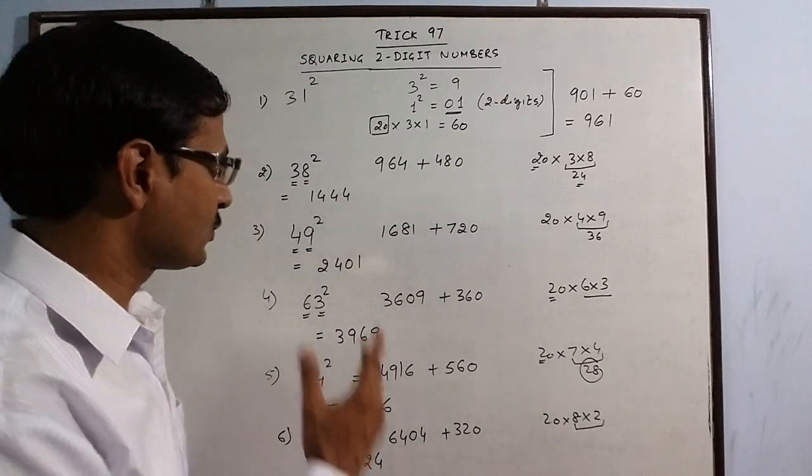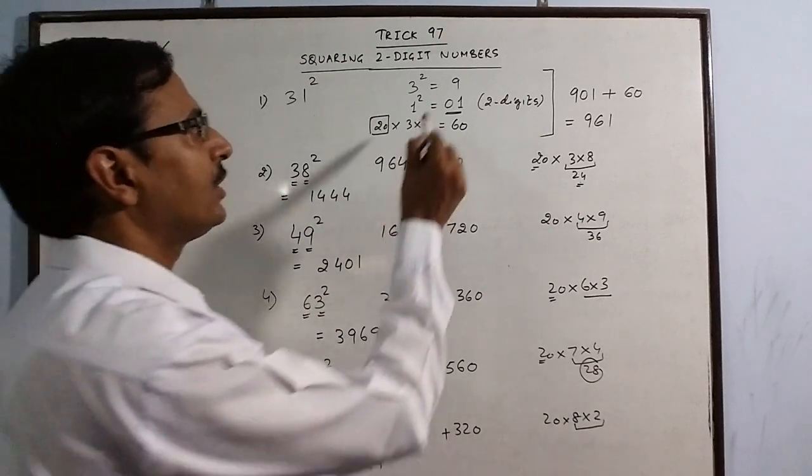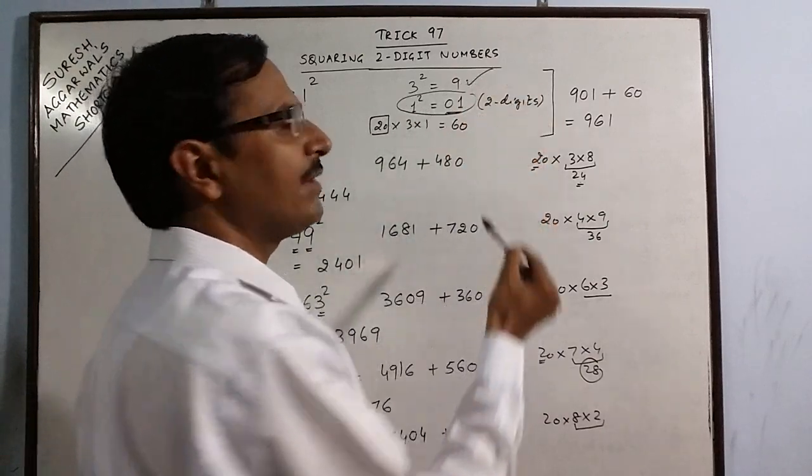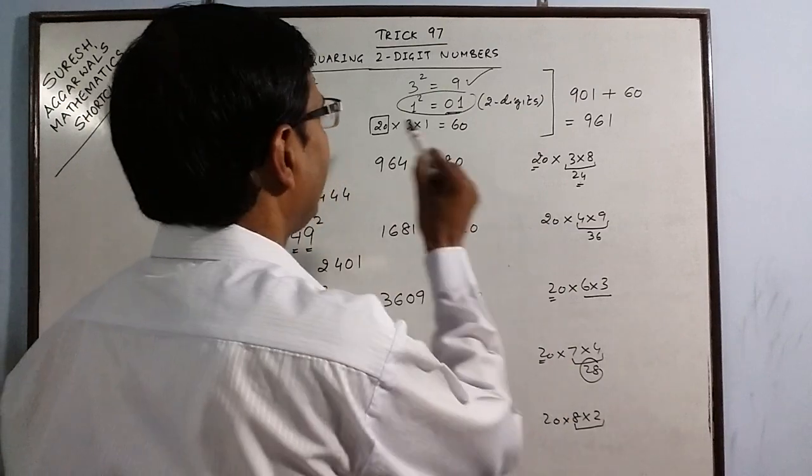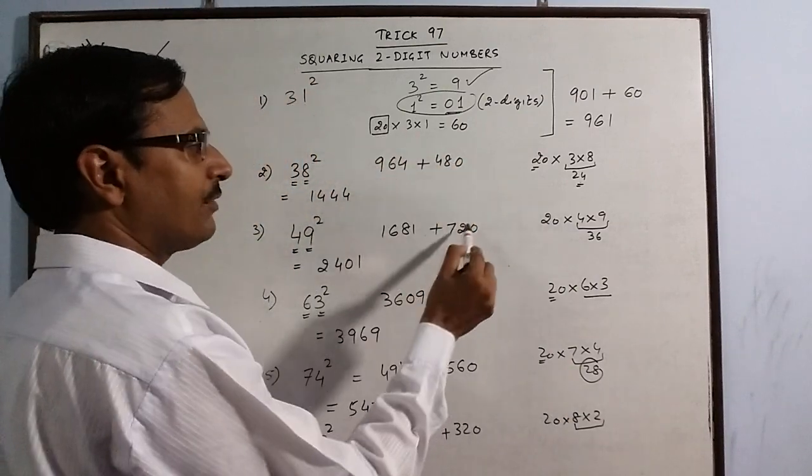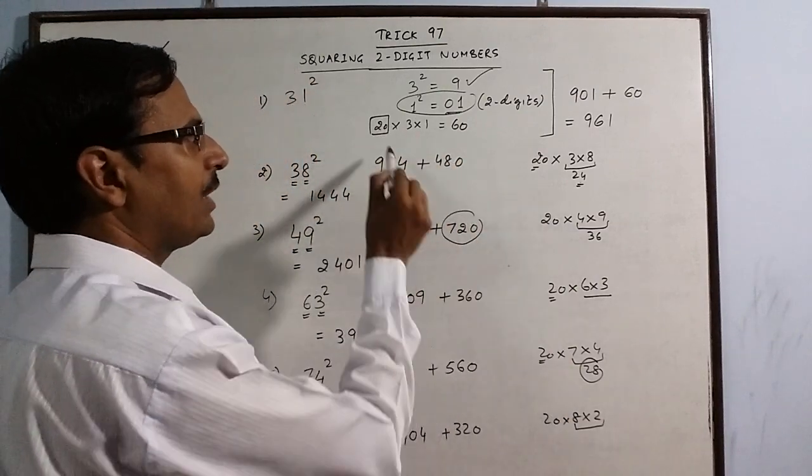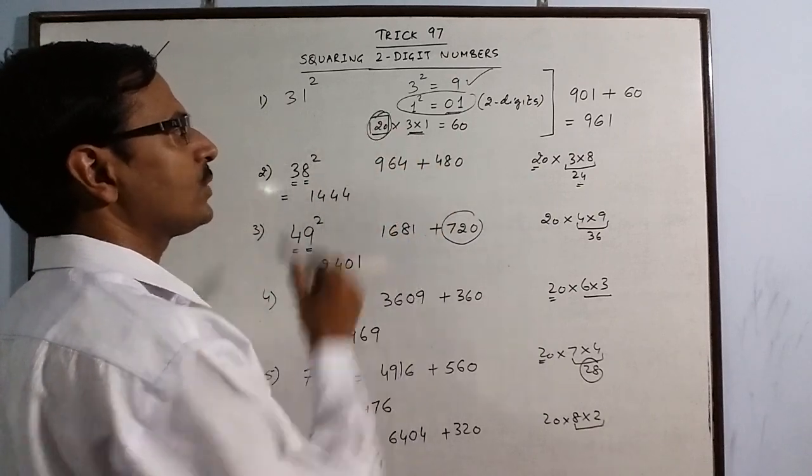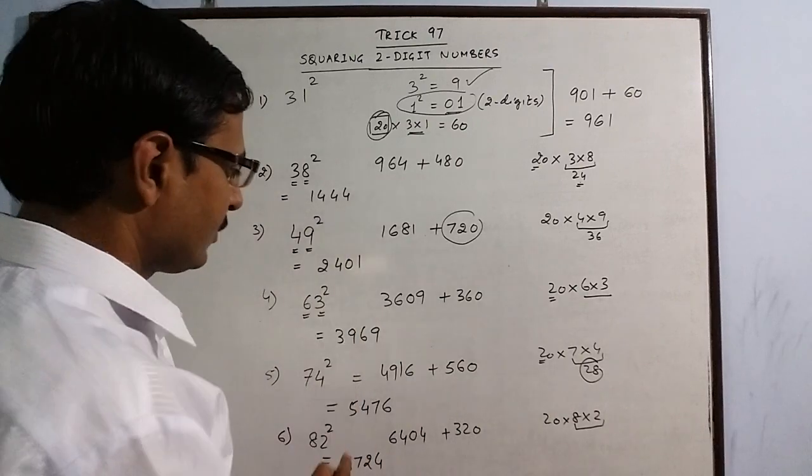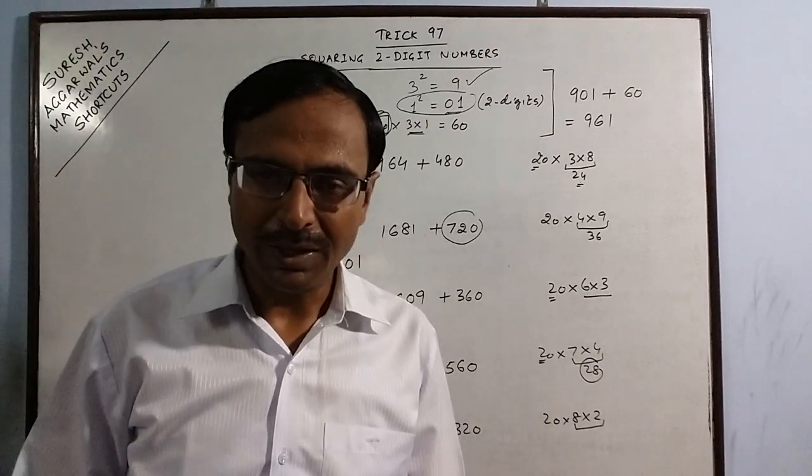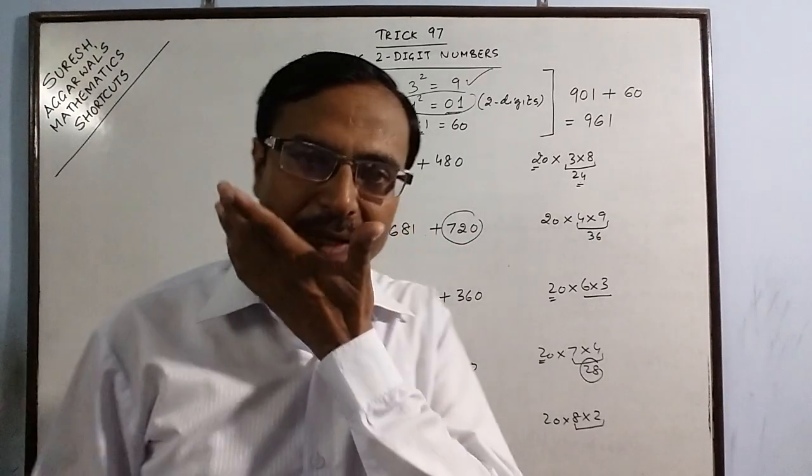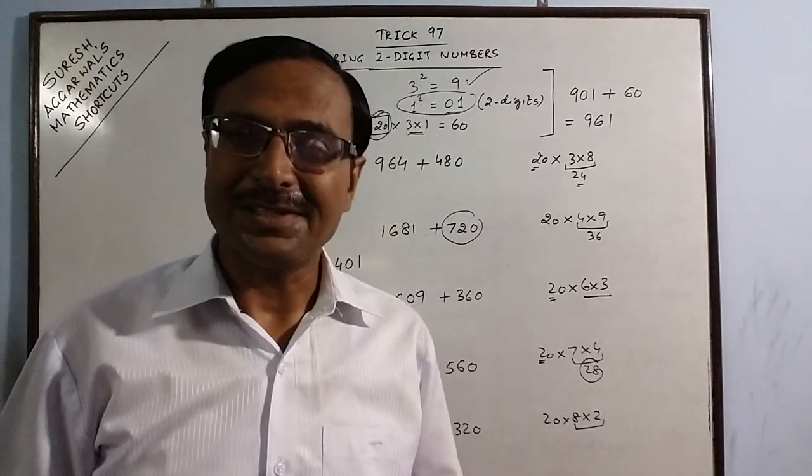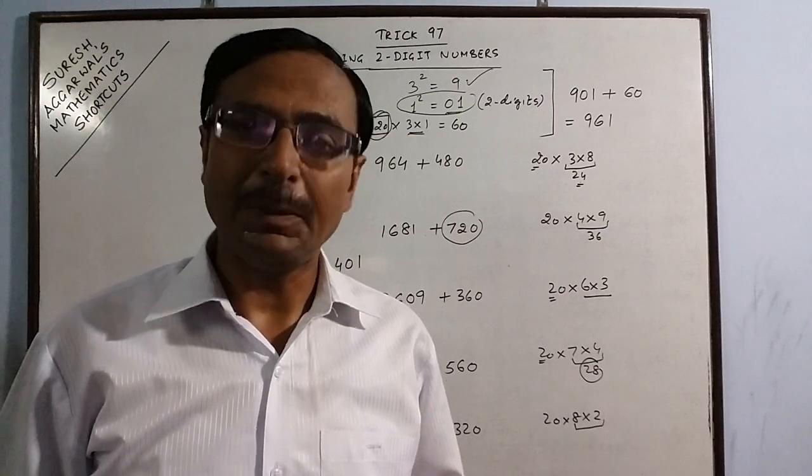So friends, you can go on and find the squares of so many two-digit numbers using this small method. Remember, you need to have two digits in the second square - in the first you can have any number of digits, 1 or 2. In the third, whatever number you are adding here is obtained by multiplying the product of the digits with the constant quantity 20. Through this method you will find the square of all numbers from 11 to 99 very easily. If you like it, share and subscribe the channel and keep learning mathematics.